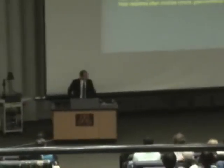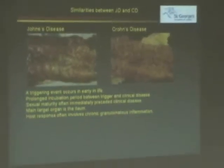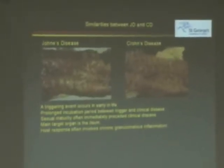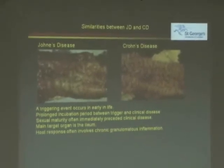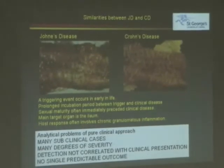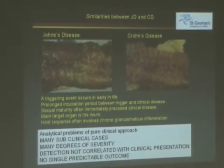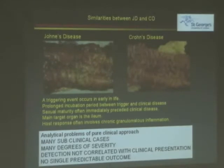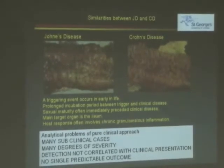We start with the similarities between Johne's disease and Crohn's disease. There are quite a few, and they're quite striking. And there are, of course, the historical reasons for suspecting MAP. There's quite a list of them. But there are some problems with this particular approach. The analytical problems of a pure clinical approach, particularly in a disease as complex as this, is difficult to actually analyze.